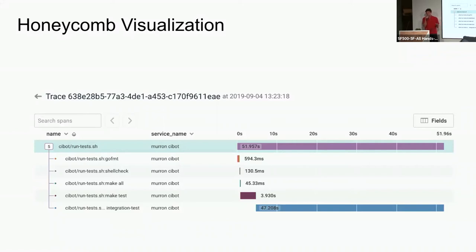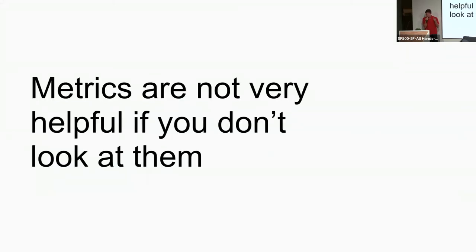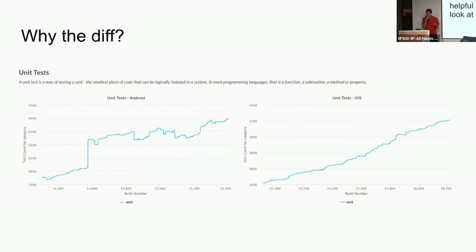Metrics are not really very useful unless you look at them on a regular basis. We have a bunch of dashboards and we try to review them every single week and ask questions about the data and trends we see, then form action items. Coming back to the test trends: if you notice, the difference between Android and iOS is really interesting. On Android, you see spikes and things regularly fall then go up — it's jagged. Whereas on iOS, it just keeps going up.